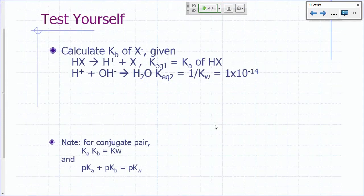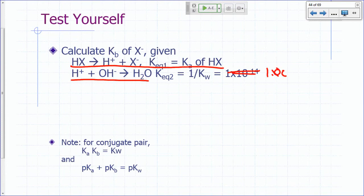How about this one? You have two reactions. HX gives you H plus plus X minus. The KEQ for this, you can look it up. It's the KA of HX. And we've already seen that H plus plus hydroxide to give you water has a KEQ of 1 over KW. This should be 1.00 times 10 to the 14. I made a mistake there, right? That's 1 over KW. So what would be the KB of X minus?